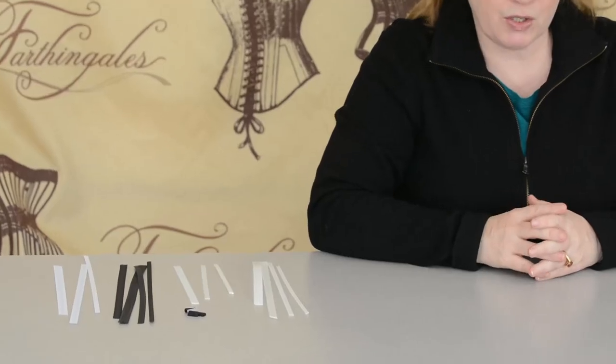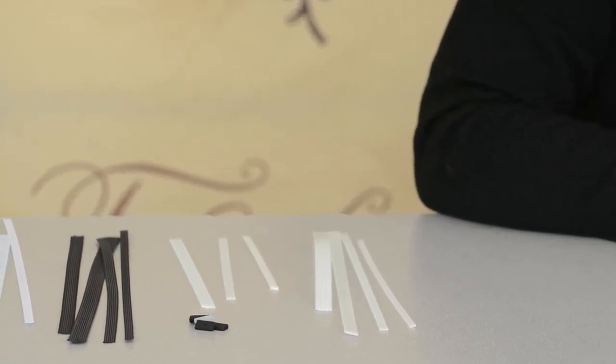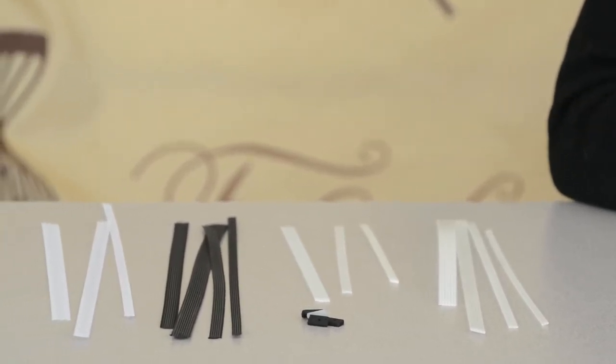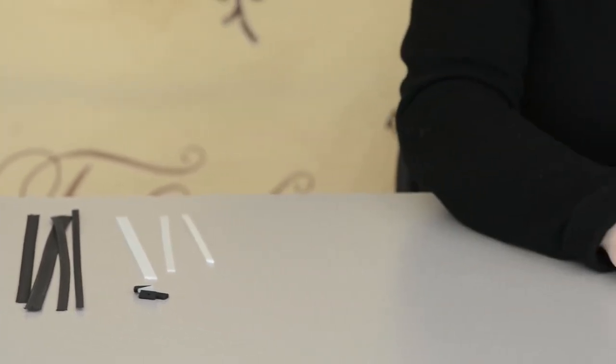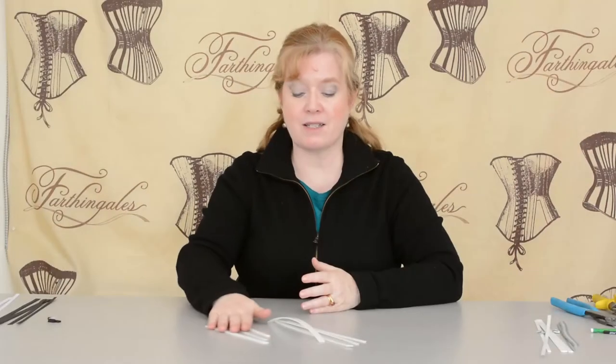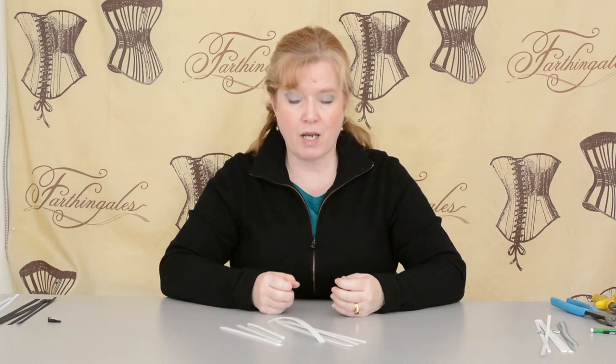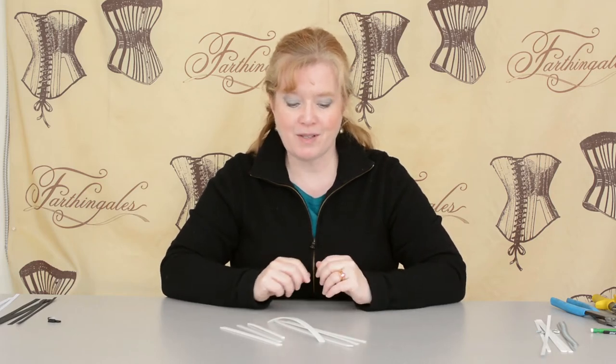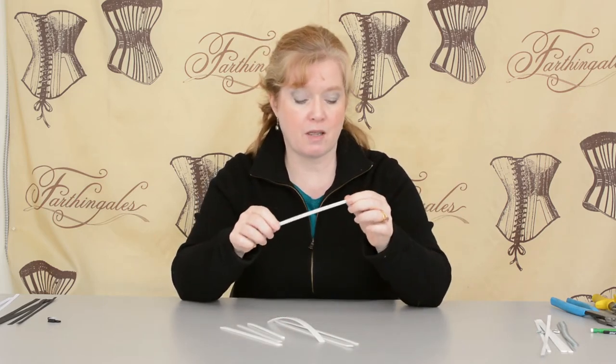We're going to move on to plastic boning now. We often think that plastic boning is no good for corsets. That's actually not true. But I will say that the boning you buy in an average fabric store is not a good choice for corsets. The boning that I have here is actually designed for corsets. So it is plastic boning. Maybe we should use the word synthetic boning and it won't be quite so offensive.